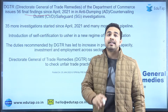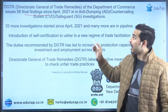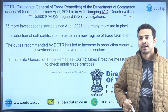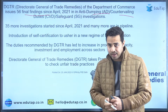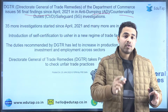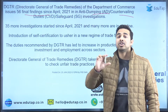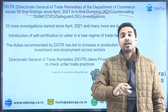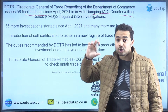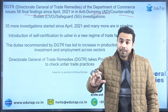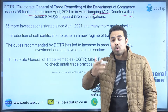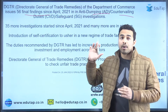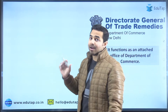These 56 final findings relate to anti-dumping, countervailing duties, and safeguard investigations. Anti-dumping is one of the measures taken by the government to rectify the situation of dumping of imports in the country. Against those dumped imports, the government takes action by imposing anti-dumping duty on those particular imports.